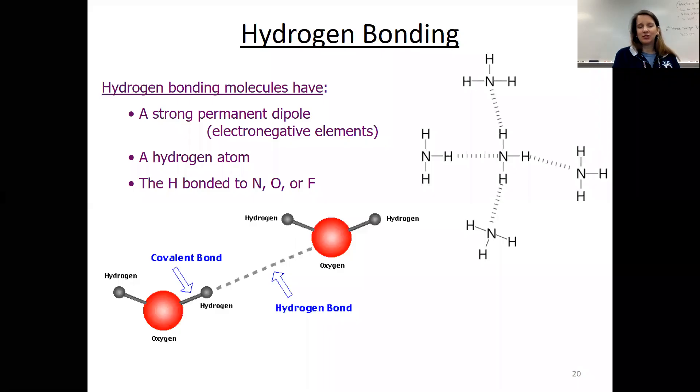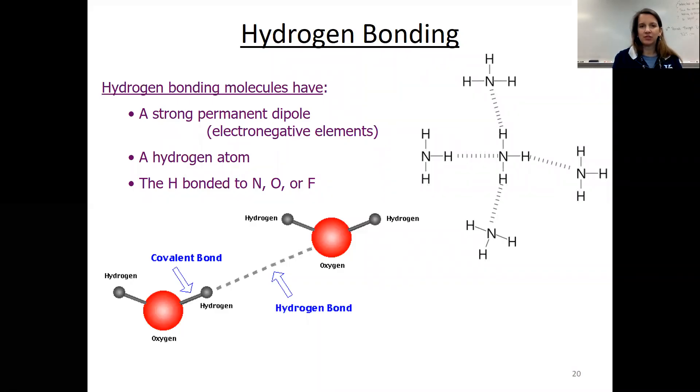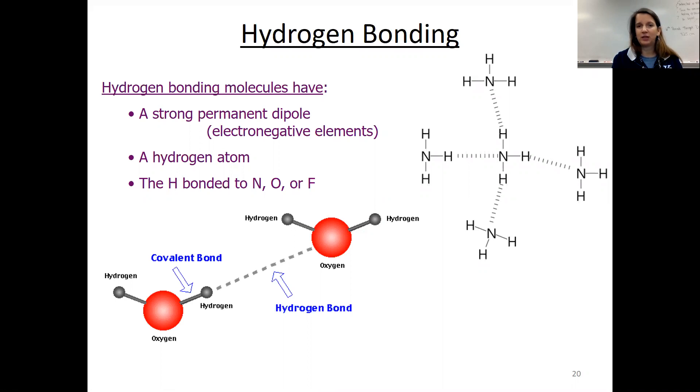All right, so when we first started talking about intermolecular forces, I said that there were three types of intermolecular forces that existed between covalent molecules. The London dispersion forces was the weakest, then the dipole-dipole interactions, and now hydrogen bonding is the strongest intermolecular force that we have.